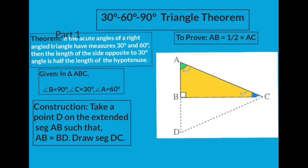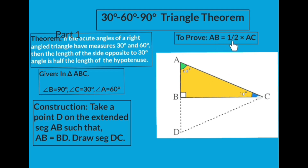To prove AB is half of AC, we need to make a path to reach that goal. By construction, AB equals BD, so AB is half of AD. We need to prove AB is half of AC. So our first step is to prove that AD equals AC — by establishing this, we can then conclude that AB is half of AC.